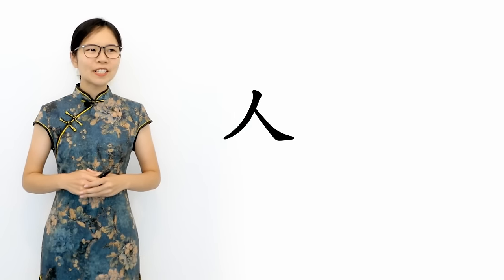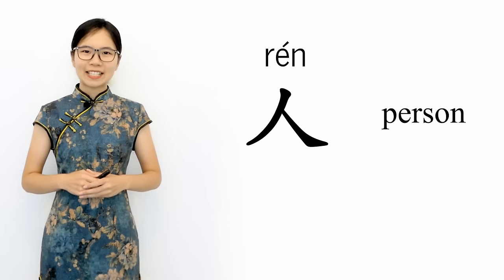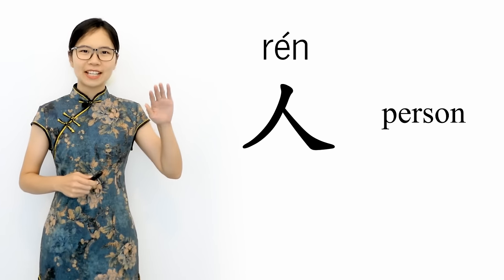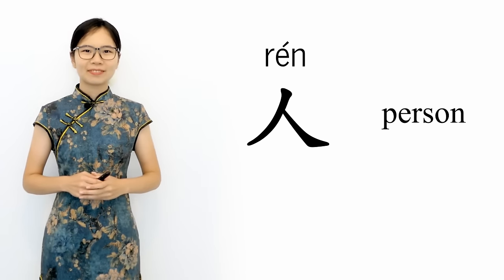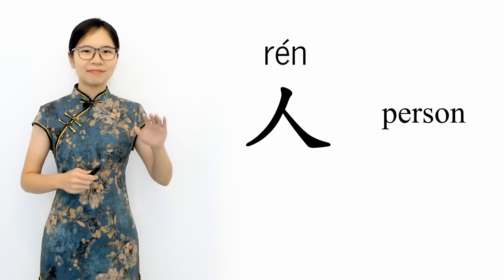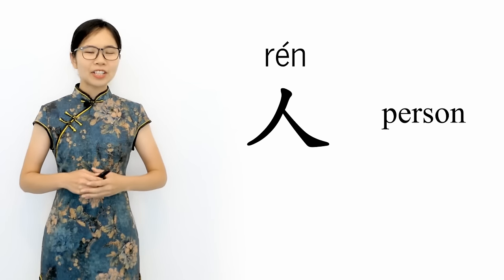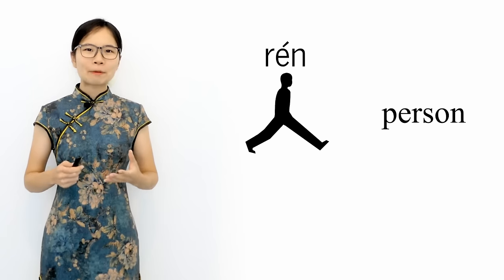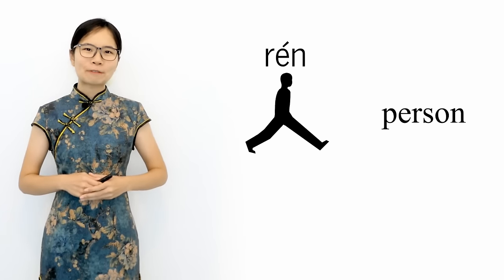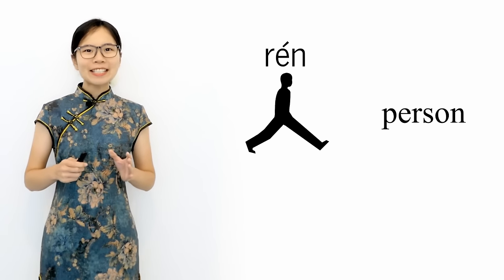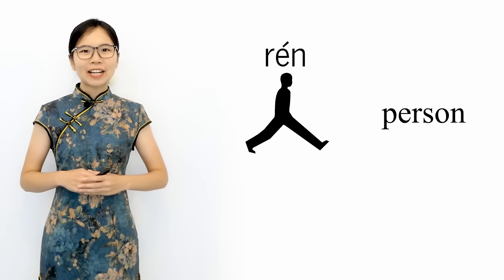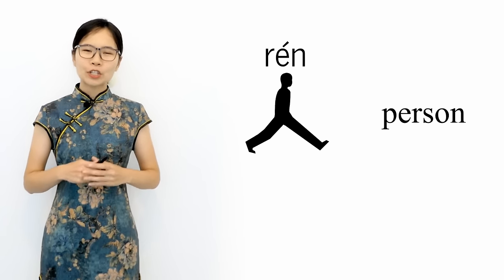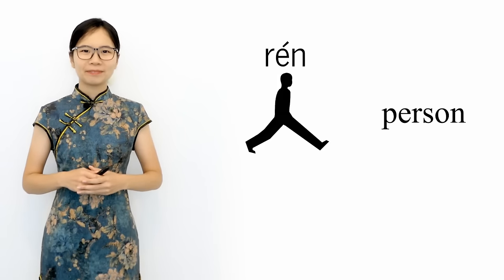Our first character is 人, which means person. This character comes from a drawing of a person viewed from the side. Imagining this character as a person taking a walk should make it easy to remember.